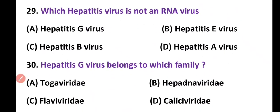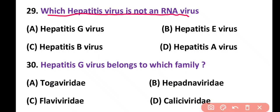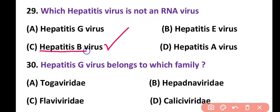Question 29. Which hepatitis virus is not an RNA virus? Hepatitis G, hepatitis E, hepatitis B virus, or hepatitis A virus? Correct answer is option C. Hepatitis B virus is not an RNA virus; rather it is a DNA virus — a DNA-enveloped virus.